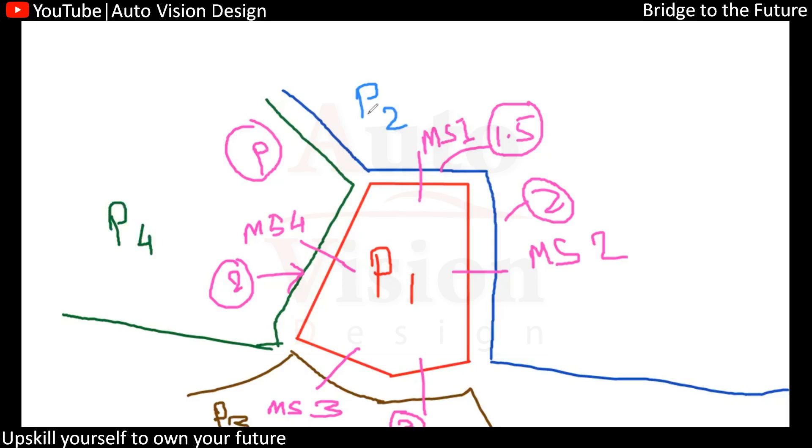And that with respect to the master section or the input we're given. So this gap we can maintain by simply offsetting this surface throughout the periphery till this surface.